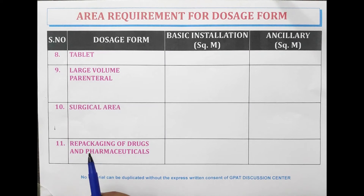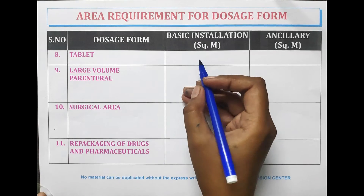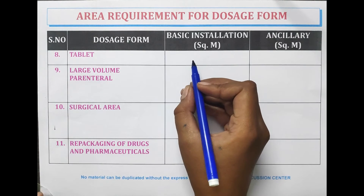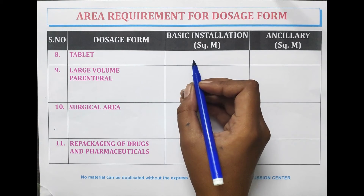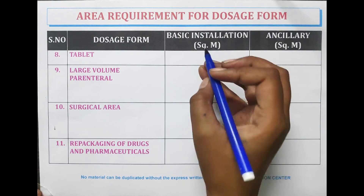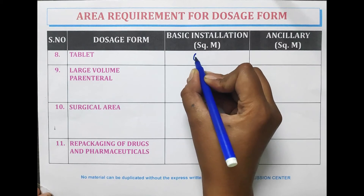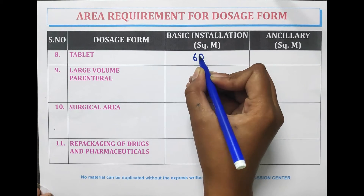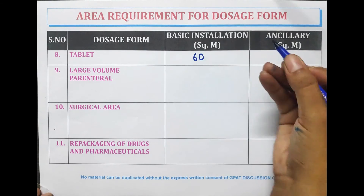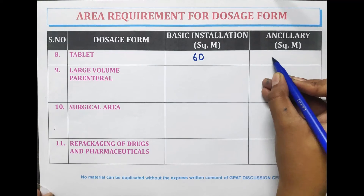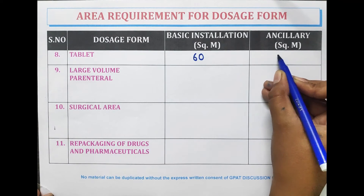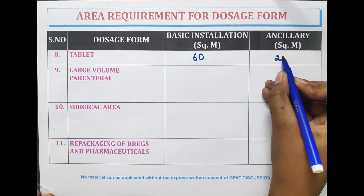For tablets, the basic installation requires an area of 60 meter square, and for ancillary area a minimum of 20 meter square is required.